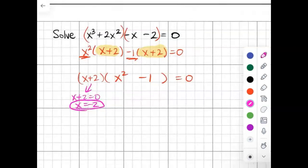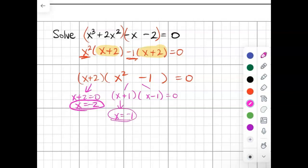And then over here, you could actually factor this further. This is a difference of squares, x plus 1, x minus 1. And if you set each of those equal to 0, you're going to get negative 1 as a solution and positive 1 as a solution.